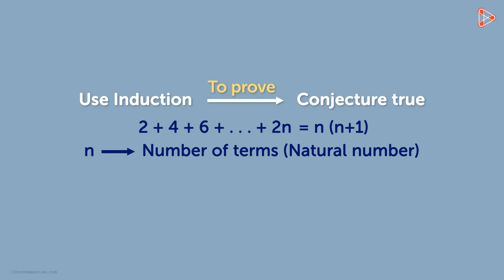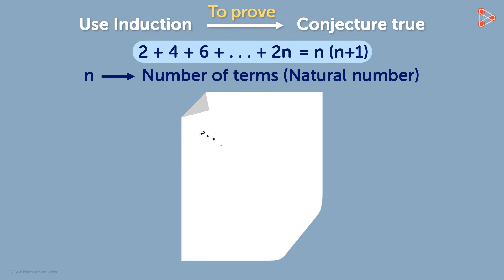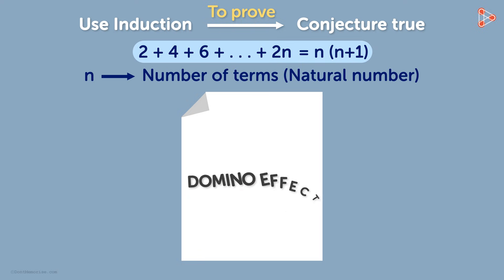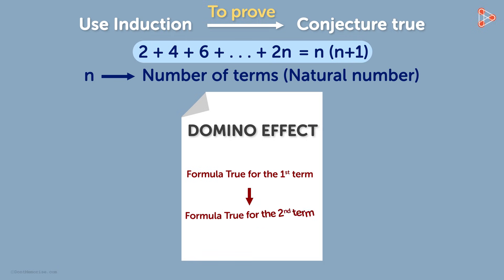We cannot check the reliability of the formula for all the terms of the expression one by one, as it would be very time consuming. In order to check the validity of the formula for each term, we need a domino effect showing that if the formula is true for one integer, then it will also be true for the next and so on.